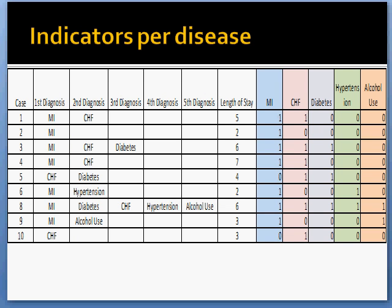For each case, we assigned indicators to help determine the severity index. The cases were assigned a one for each disease if it was present for that case. For example, in case number one, MI and CHF were present, so under the blue and pink columns for the corresponding disease for case number one, a number one was placed. Since diabetes, hypertension, and alcohol use were not present in the case, a zero was placed in this column.